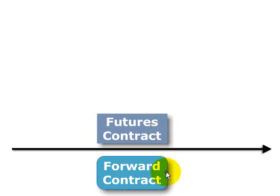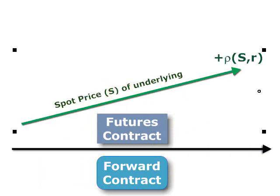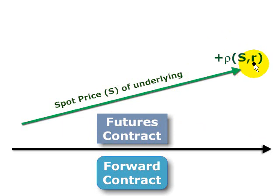Why would the prices be different? The primary reason is daily settlement. For the futures contract, if we consider a long position, that long position needs to maintain a margin account, and that margin account will be settled daily. Let's look at how that gives rise to a price difference between the two by assuming a generic asset with a spot price of S. The key issue, according to John Hull for FRM candidates, is the correlation denoted by Greek rho between the spot price on the asset and the interest rate denoted by small r.